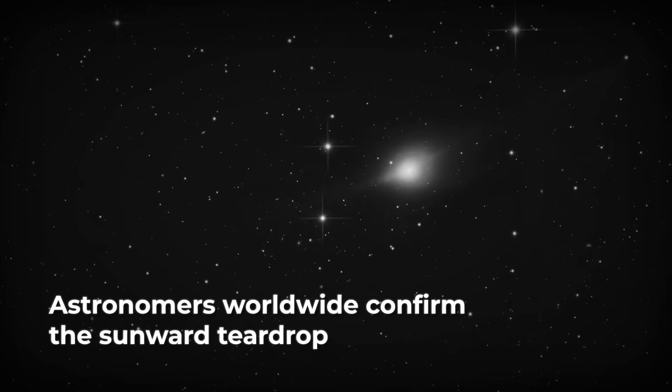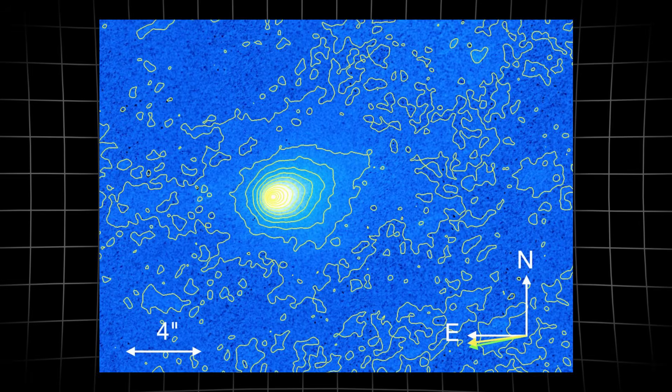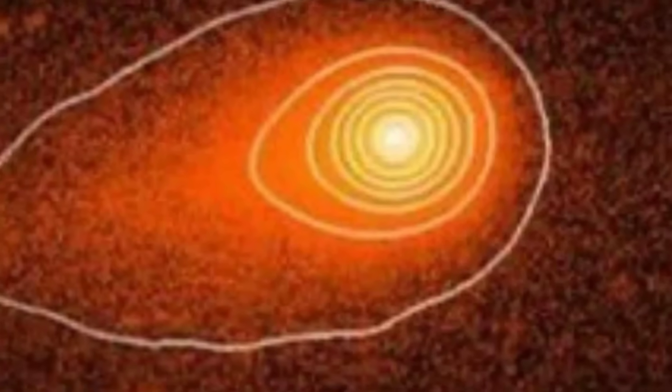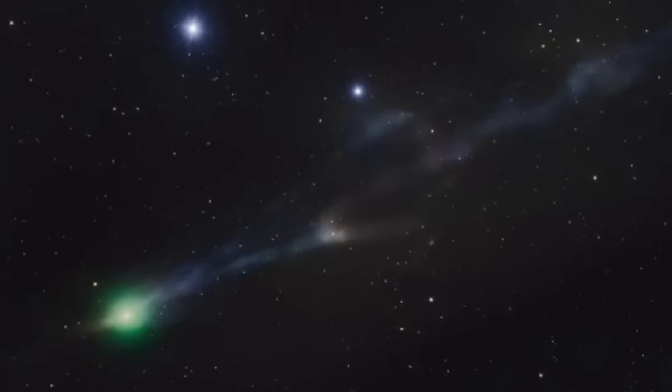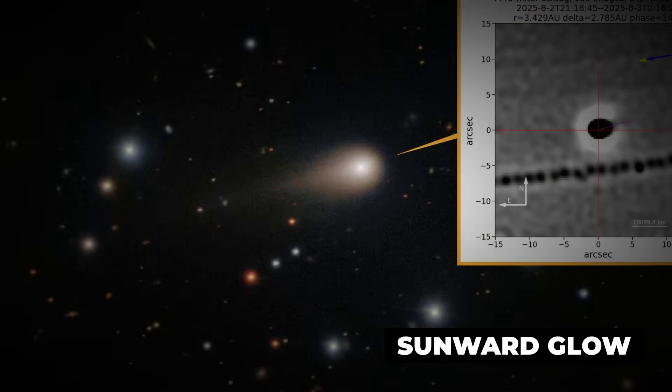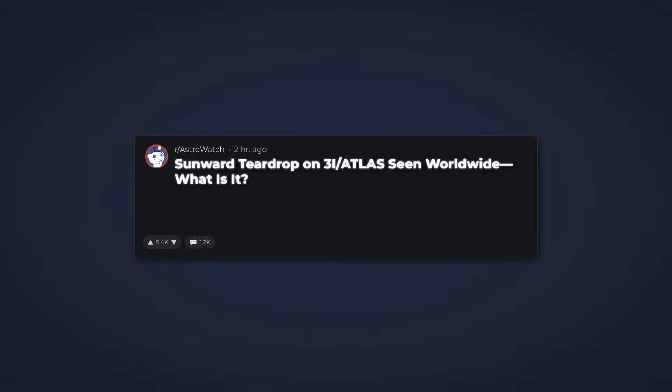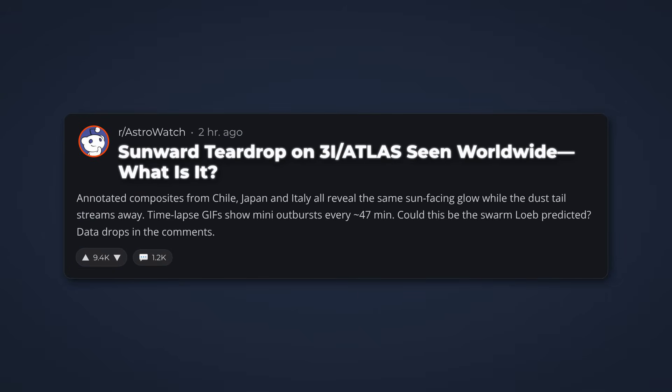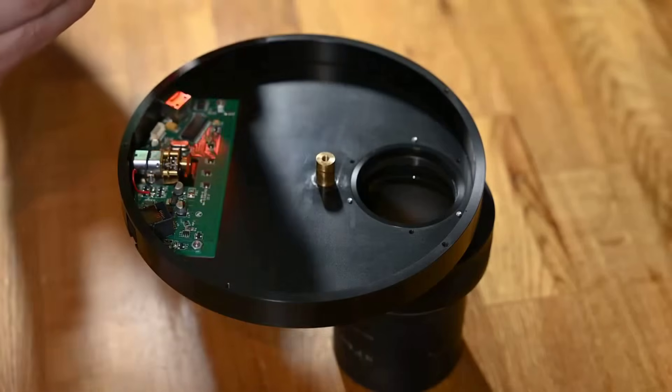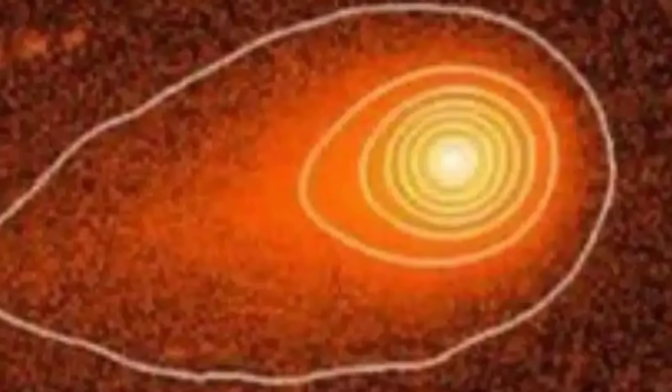In some images, the main body of 3I Atlas sits at the edge of a diffuse, elongated haze. The brightness gently tapers off toward the Sun, forming a structure that defies expectations for a comet. Normally, solar radiation blows gas and dust outward, sculpting tails that stream away from the Sun, never toward it. Here, the brightest extension clings to the sunward side. Independent astronomers, many working outside large institutions, share their findings in real time. Online forums light up with annotated images and time-lapse sequences. Some observers use specialized filters to isolate the sunward glow, confirming it is not an artifact of the Earth's atmosphere or instrumental quirks.